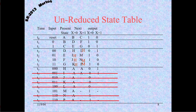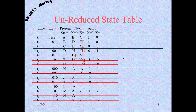Looking again at the updated table: D is H, H with output 0,1; E is H, M with output 1,0; F is H, M with output 1,0; and G is H, M with output 1,0. So E, F, and G are all the same. We reduce G and F and substitute in E. That leaves us with states A, B, C, D, E, H, and M — seven states total. We eliminated eight states, which is quite helpful.